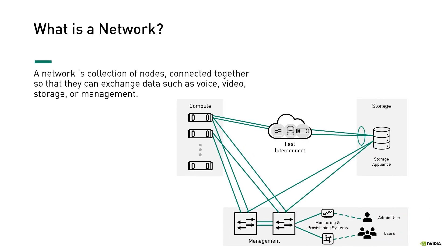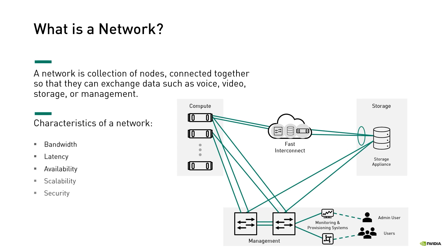A network is a collection of nodes connected together so that they can exchange data such as voice, video, storage, or management. Applications running in modern data centers have unique performance requirements. The network must be able to provide the performance expected by the running applications, such as high bandwidth and low latency. In addition, the network must be highly available and scalable to support future growth.